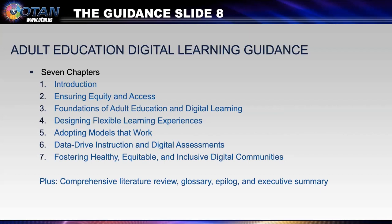The digital guidance document has seven chapters. The introduction provides a brief history of adult education — it's important to know where we come from to understand where we are. Chapter two covers ensuring equity and access, mainly talking about devices, connectivity, understanding learners' needs, accessibility, and universal design. Chapter three talks about the foundations of adult education and digital learning, covering different theories, the various standards mentioned previously, and professional development.